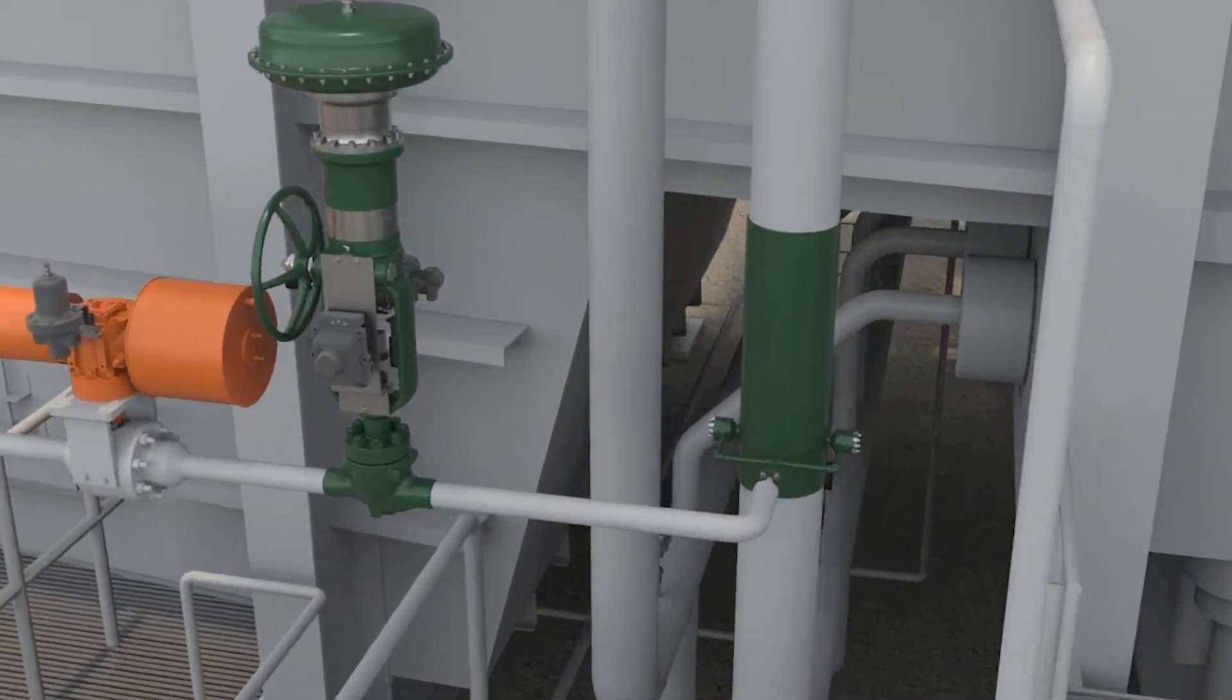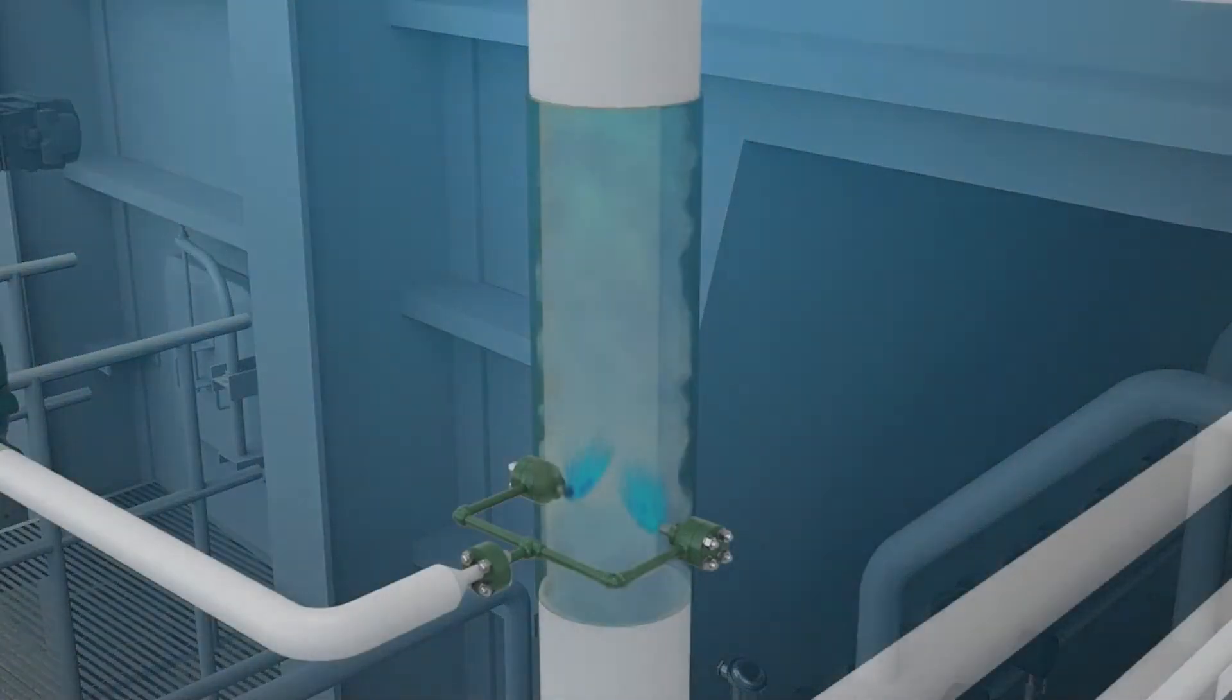The control system measures the temperature of the steam, compares it to set point, and then increases or decreases the spray water accordingly to maintain temperature set point.